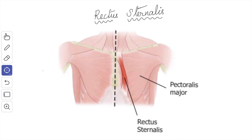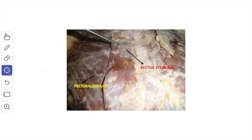An occasional muscle is the rectus sternalis, disposed longitudinally along the side of the sternum and in front of the pectoralis major muscle. It is a derivative of the superficial part of the rectus abdominis muscle and is supplied segmentally by the intercostal nerves. Here in this picture of a dissected specimen you can see the pectoralis major muscle, and in front of it this longitudinally disposed muscle is the rectus sternalis.